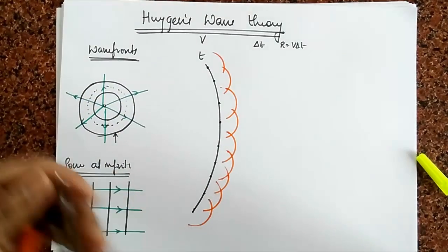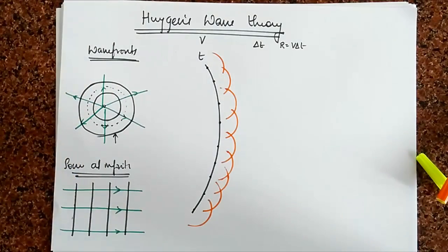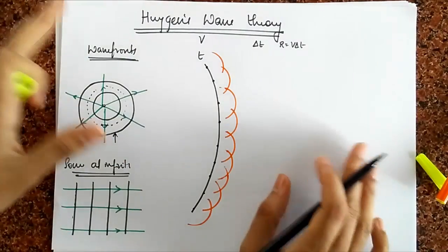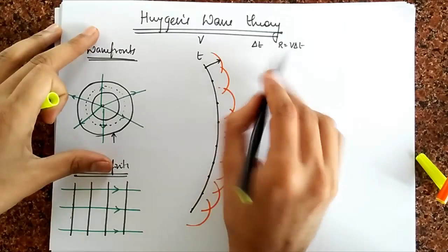Ta-da! So these, what I have drawn, are all secondary wavelets. So spherical waves that are given out by the secondary Huygens sources. And each one has a radius of exactly V delta t.